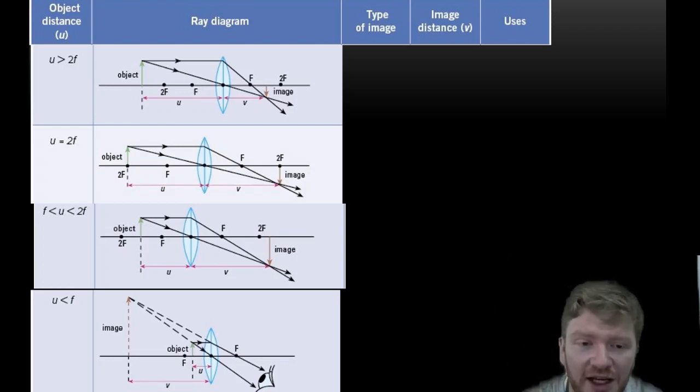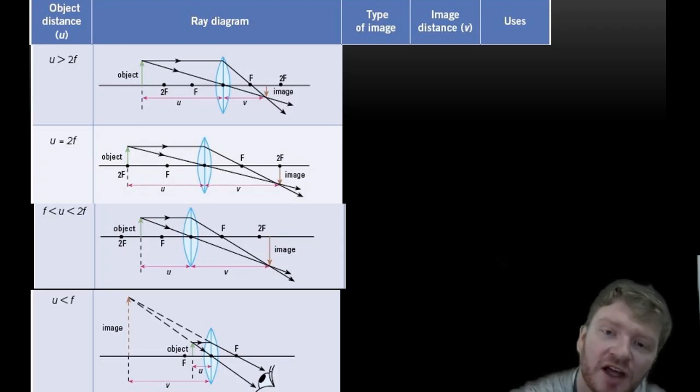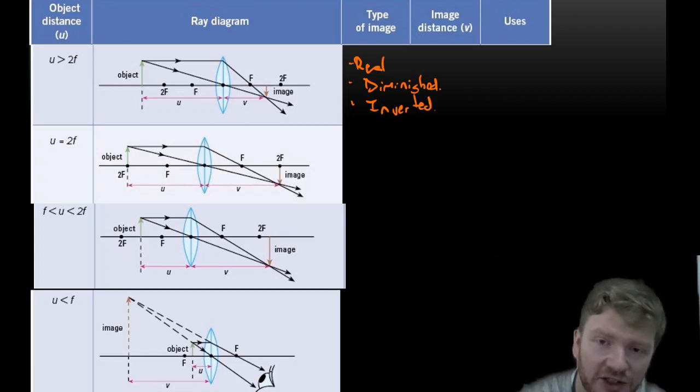So here I have four lenses. And what I would like you to do is try to describe the image for each one. Okay, so this first one here. This is a real image. It is diminished because it's smaller. It is inverted because it's upside down. And the location is where we see it.